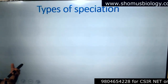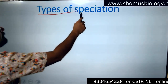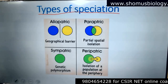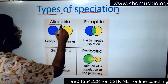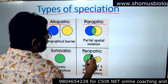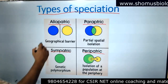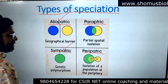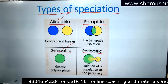So what are the types of speciation? There are four different types: allopatric speciation, parapatric, sympatric, and peripatric. Allopatric and sympatric are the more common ones that we need to understand.